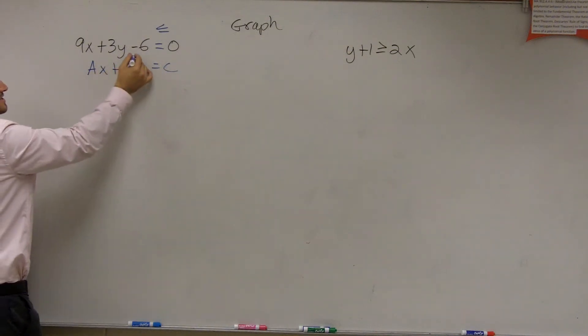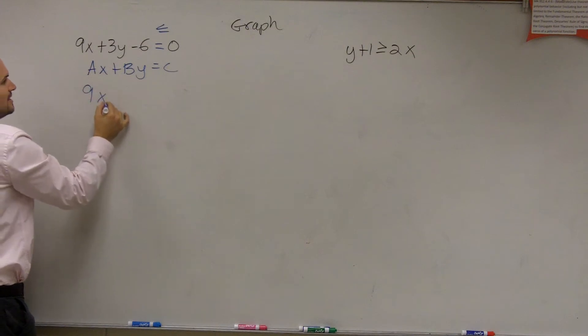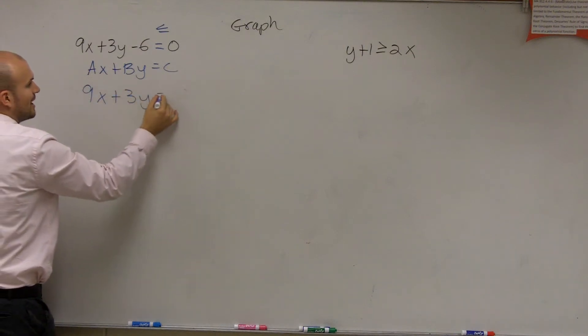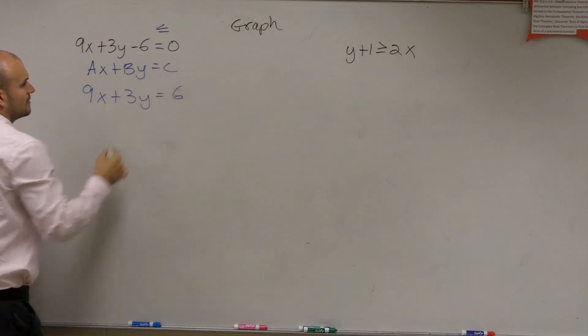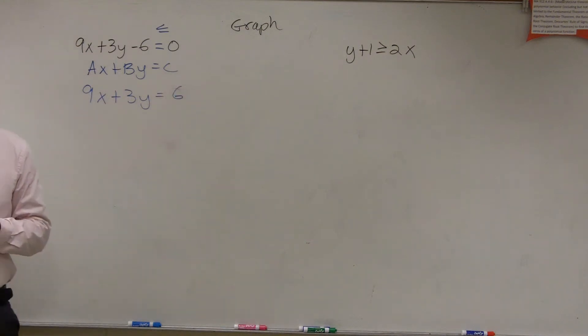So to put this in that form, I need to add the 6 to the other side. So I get 9x plus 3y equals 6. Follow me? OK.